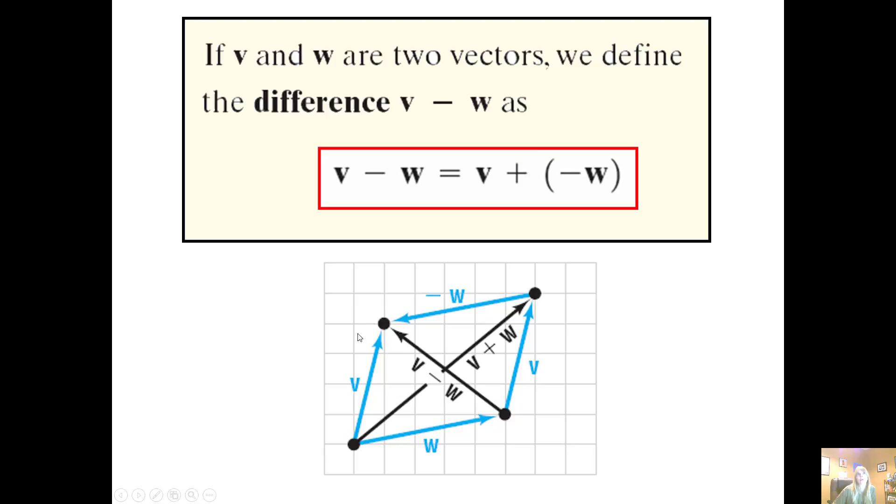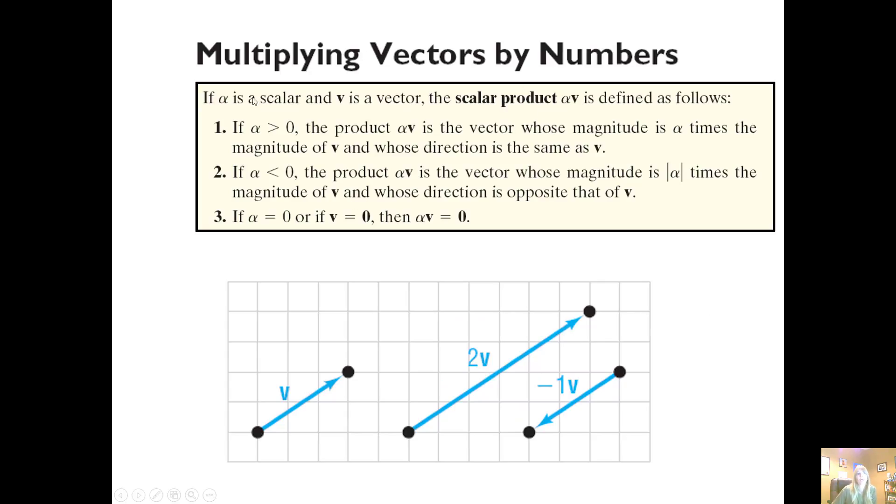If I want to multiply by a number, we call this a scalar. Two times vector v means I'm multiplying the magnitude by two. If I multiply by a negative value, that reverses the direction. If alpha is my scalar, the product alpha times a vector has magnitude alpha times the magnitude of the vector, with the same direction. If alpha is less than zero, the magnitude is still the same but we change the direction. If alpha equals zero or the vector is zero, I get zero.